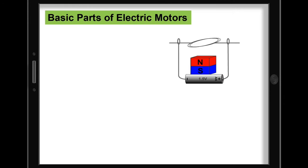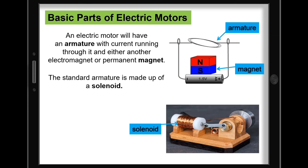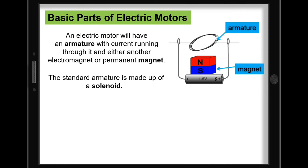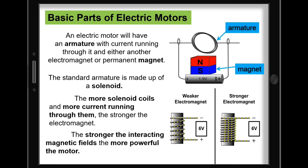Here are some basic parts of an electric motor. An electric motor will have an armature with current running through it and either another electromagnet or permanent magnet. The standard armature is made up of a solenoid. Keep in mind that the more solenoid coils and more current running through them, the stronger the electromagnet. Therefore, the stronger the interacting magnetic fields, the more powerful the motor is.